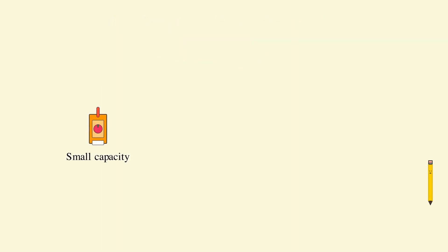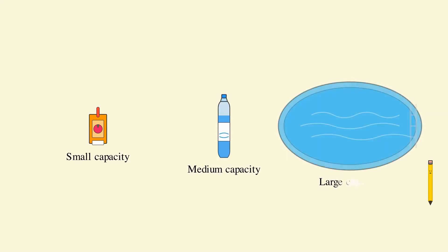A small juice box holds a little bit of juice. A big water bottle holds more. A swimming pool holds a lot of water. When we compare, we say: more capacity holds more liquid, and less capacity holds less liquid.